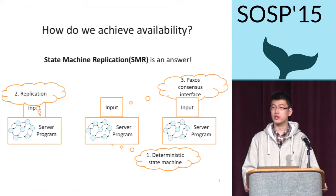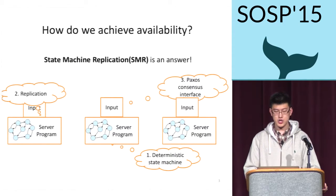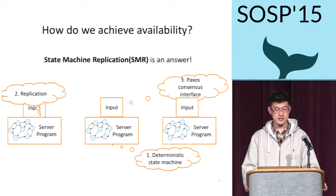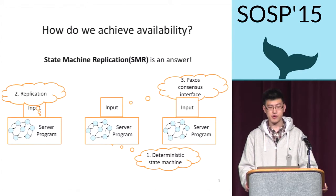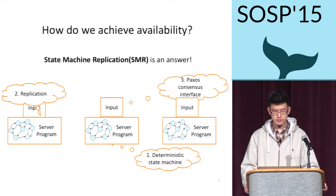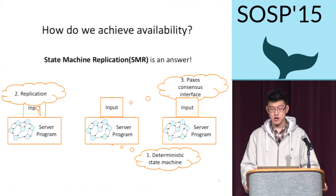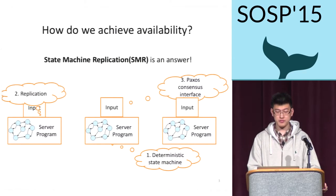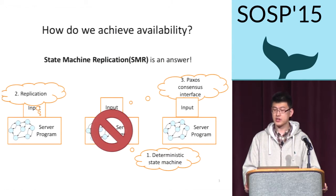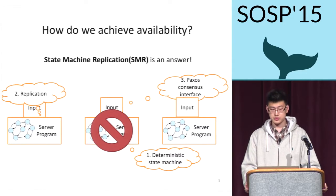For this protocol to work, we also need to define a consensus interface. You can view the consensus interface as the input interface of our program. As a result, all the consistent input will make sure the state machines go through the same state transitions, thus provide the same output. Even if one node fails, the system can still work properly as long as the majority of the nodes is fine.